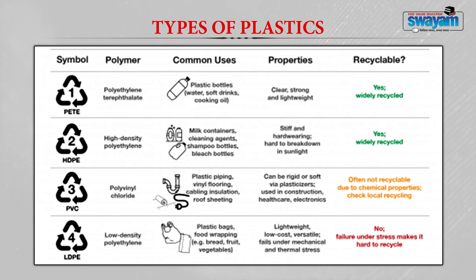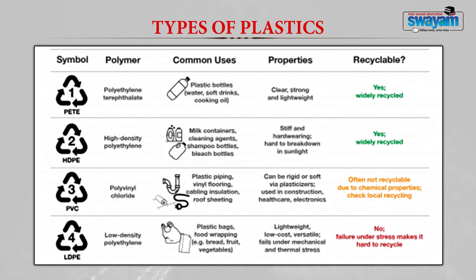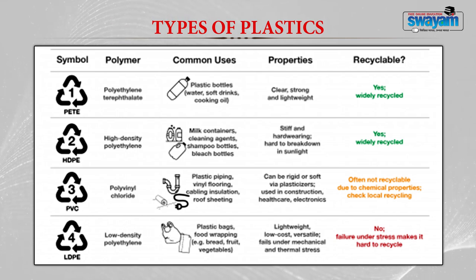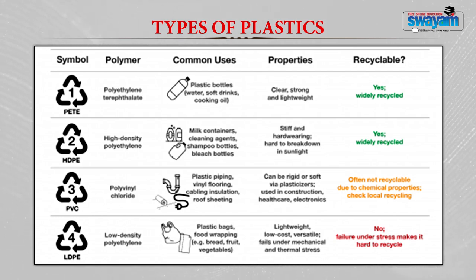The fourth type is low density polyethylene, LDPE, used in manufacturing plastic bags and food wraps where bread, fruit, and vegetables are packed. Property-wise they are lightweight, low cost, and versatile, but they cannot withstand mechanical or thermal stress. These cannot be recycled due to the stress factor.